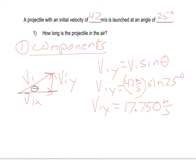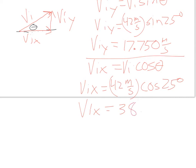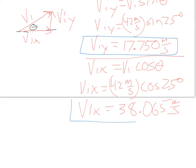For the initial horizontal velocity, VIX, that's equal to the initial velocity times the cosine of the angle. So VIX is equal to 42 meters per second times the cosine of 25 degrees. It comes out to 38.065 meters per second. Again, I'm keeping three spots past the decimal so I don't run into any rounding issues on WebAssign. For anything else I need to solve for in this problem, these two components — Viy and VIX — are really going to be the key.